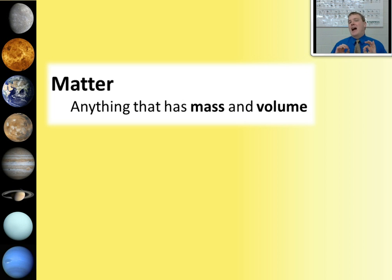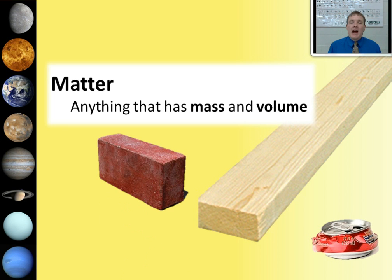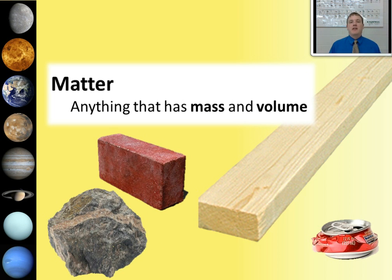There are several obvious examples of things that are matter. Wood, for example, is made up of molecules that are made up of atoms. If you lift a piece of wood, you can feel its heft, and obviously wood takes up space. If you try to walk through a wood barricade, you're probably not going to succeed because the wood is taking up space, and you can't take up the same space at the same time. Wood is an example of matter. Another example of matter would be something like a metal can. Metal, again, has heft or weight or mass, and it takes up space. Things like bricks are obviously matter, and rocks are obviously matter. These are all examples of things that have mass and take up space.